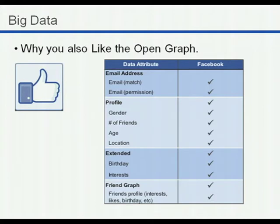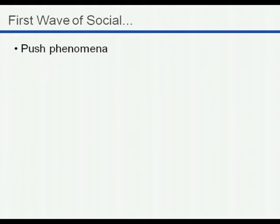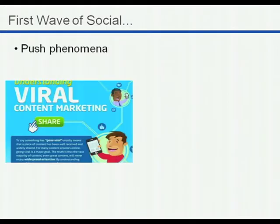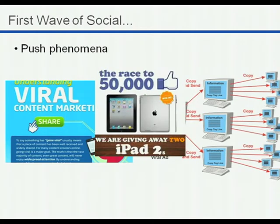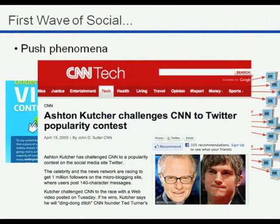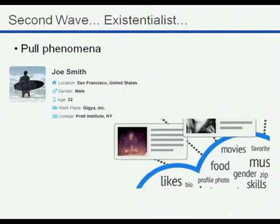Before we go into the Flowers case study, one last phenomenon. The first wave of social was push. If you recall the early days, everybody's racing for likes — it gets to a level of ridiculousness where a content network like CNN is competing with a celebrity like Ashton Kutcher for followers. The second wave is more germane to who you are — it's really about who am I, who is my customer. It's a pull phenomenon: the realization that that data is out there, that it can be acquired at scale in a privacy-friendly way. And once we get it, let's connect it with CRM and milk the retargeting capacities.